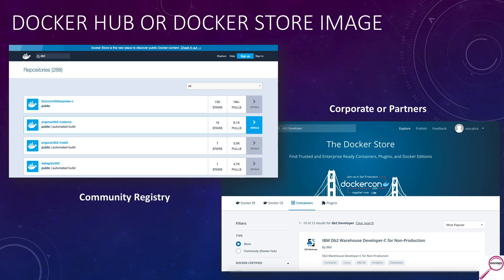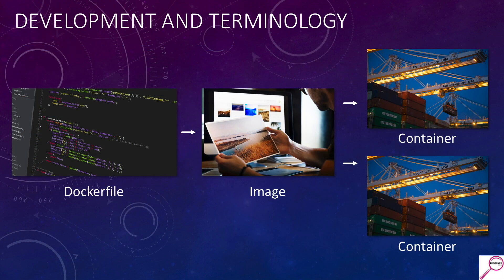Getting an image down is basically the same command either way — with Docker Store you may need to enter an ID and password and have paid for something. But in our case, especially with Developer C, it's going to be free. It looks like when IBM initially put their toes in the water with DB2, they created the Express C image in Docker Hub, whereas Developer C is over in the Docker Store.